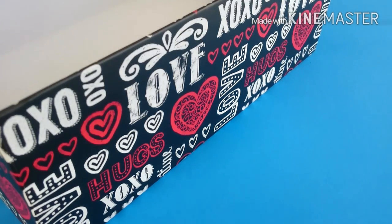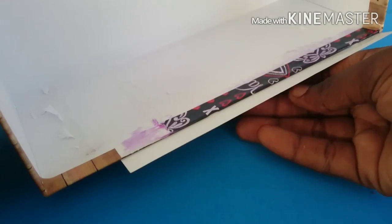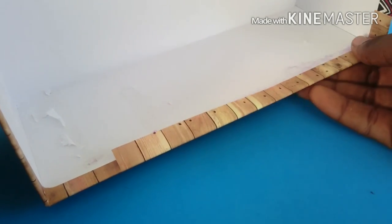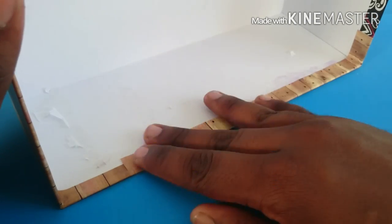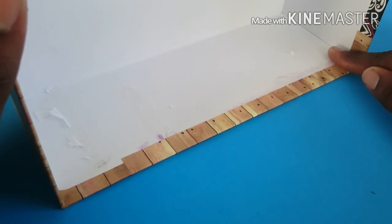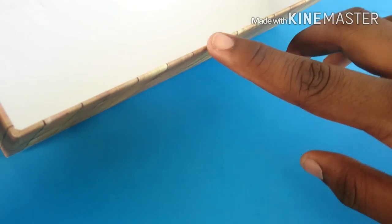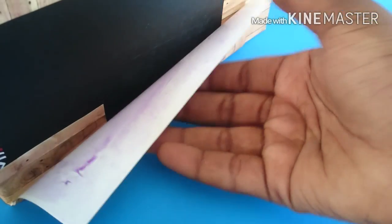I'm going to start by gluing scrapbook paper onto the outside of the box. I'm also going to fold over a little bit of the scrapbook paper onto the inside of the box, and this will give it a cleaner edge. I'm also going to be covering the bottom as well.